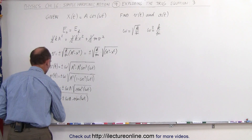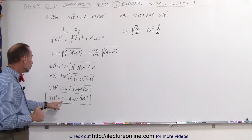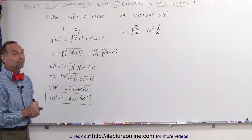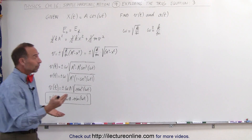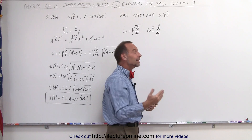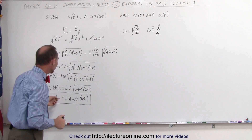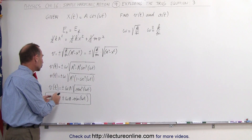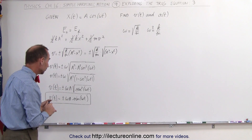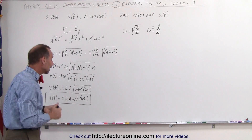Now compare that to the result we got in the previous video. In the previous video, we ended up with V of t equal to minus omega A times the sine of omega t. It turns out that with simple harmonic motion, as the object is moving back and forth, the velocity can indeed be positive and can indeed be negative. The reason we have plus or minus is because we didn't know what the initial condition was, so we're not sure if we need to use a positive or a negative. The sine of omega t can be both positive and negative, so we need to have a positive and negative there.